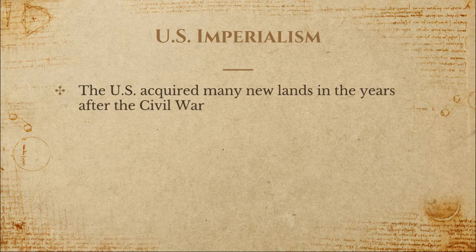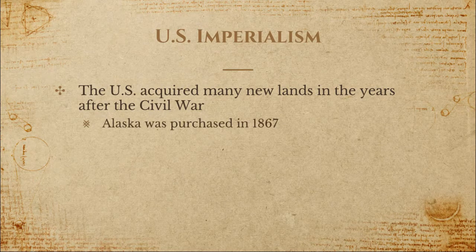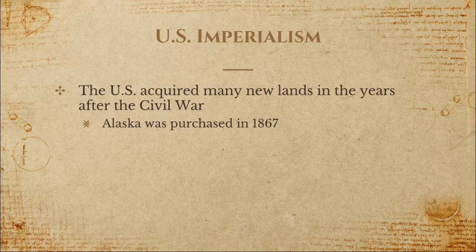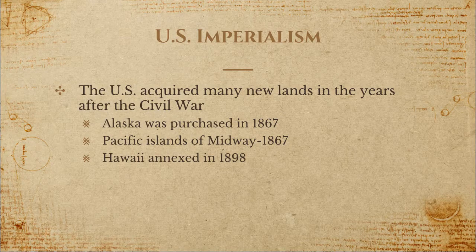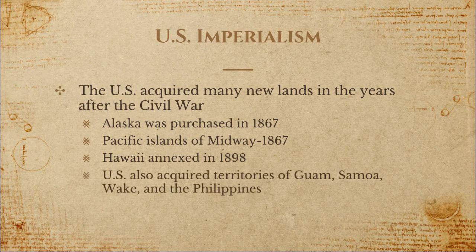The U.S. was one of the countries involved in imperialism, acquiring many new lands in the years after the Civil War. Alaska was purchased from Russia in 1867 for approximately two cents an acre, and the U.S. also gained control of the Pacific Islands of Midway that same year. The Hawaiian Islands were annexed by the United States in 1898 after the Hawaiian monarchy was overthrown, and the U.S. would also acquire the Pacific territories of Guam, Samoa, Wake, and the Philippines in this era as well.